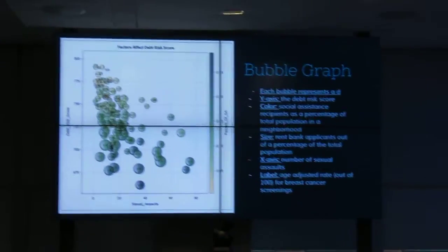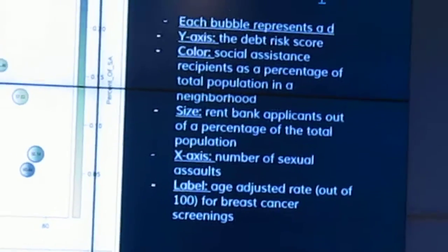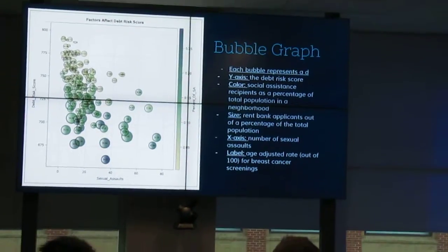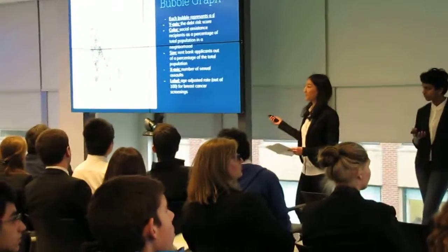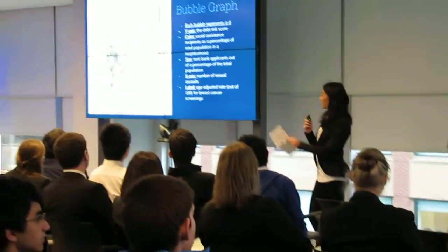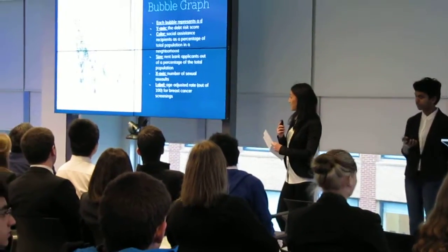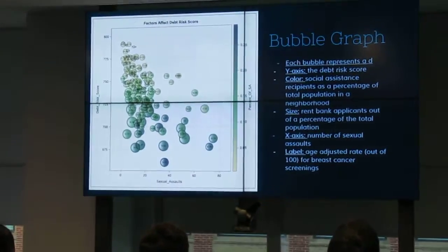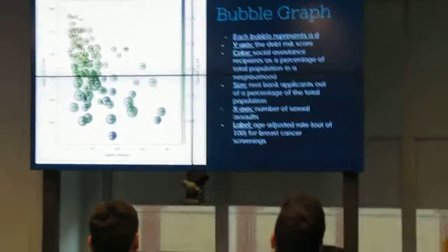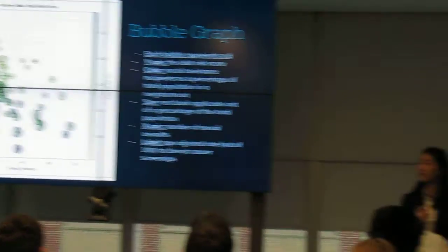I'd like to point your attention to this bubble graph. It is a summarization of our analysis and results, and it clearly shows the correlations between our variables. On this graph, each bubble represents a different neighborhood. The y-axis is the debt risk score and the x-axis is the number of sexual assaults. The color of each bubble represents the percentage of social assistance recipients — the darker the color, the more social assistance they're receiving. The size of each bubble represents the percentage of rent bank applicants, and the labels on each bubble are the rate of breast cancer screenings.